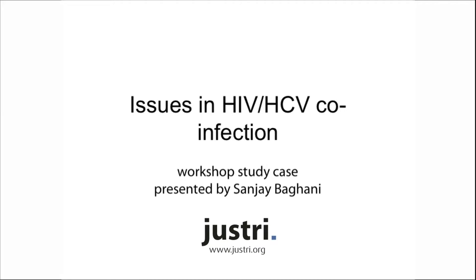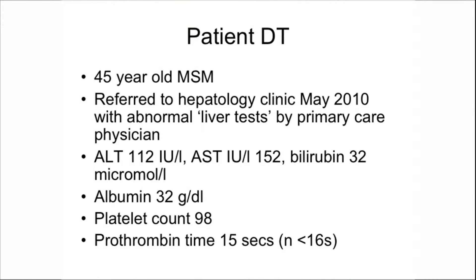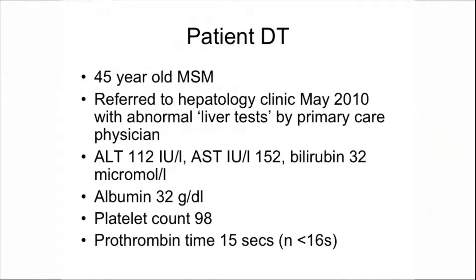This is a 45-year-old gay man who was referred to our local hepatology clinic in May 2010 from his primary care physician because he had gone in for some routine blood tests. The primary care physician had done liver enzyme testing and said this gentleman has got abnormal liver tests. He had an ALT of 112 international units per litre, upper limit of normal is 40, and his AST was 152, upper limit of normal is 40.